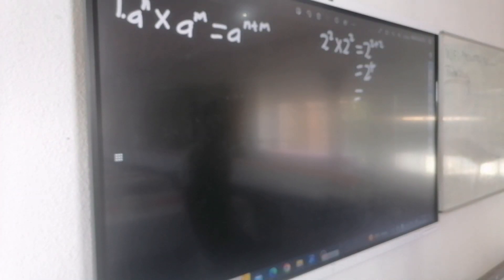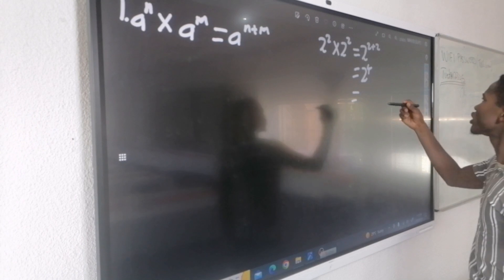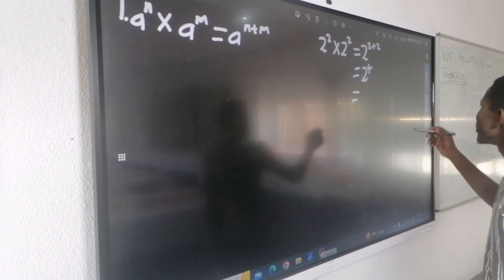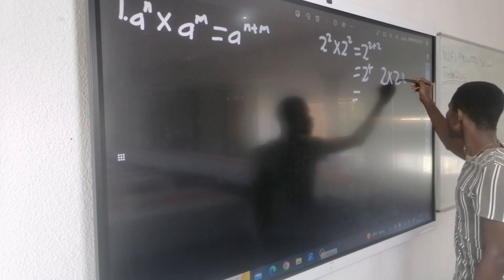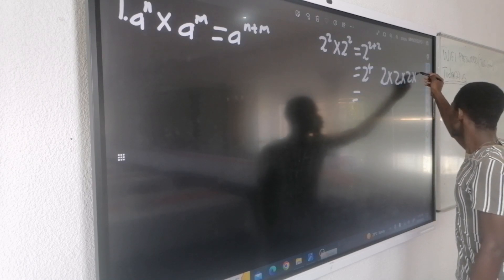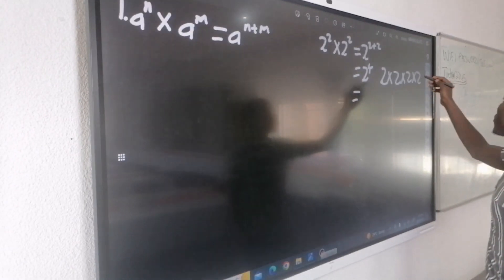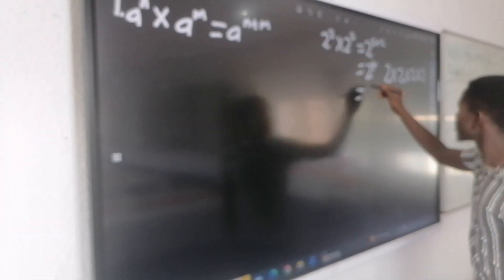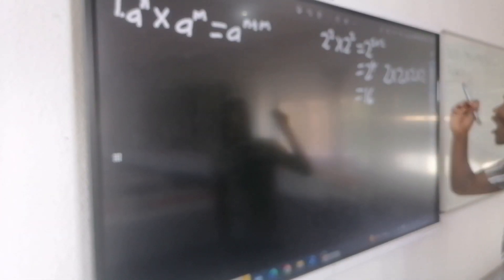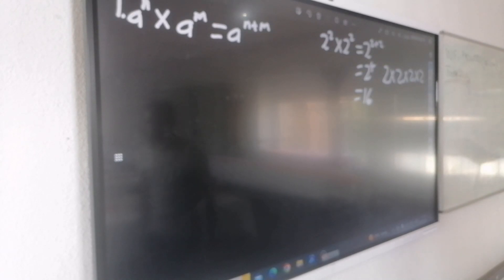I know that 2 to the power of 4 — remember — does not mean I take 2 and multiply by 4. It means 2 times 2 times 2 times 2; there must be 4 of them. So 2 times 2 is 4, times 2 is 8, times 2 is 16. That's how I apply the first law.